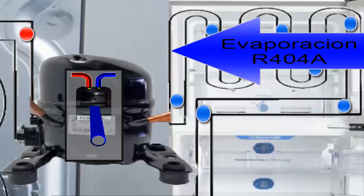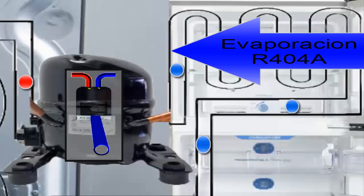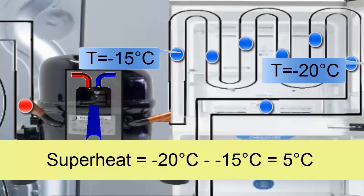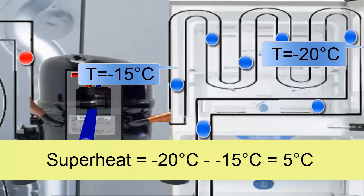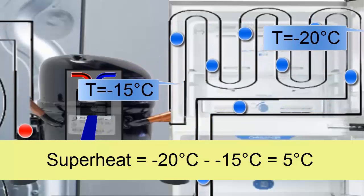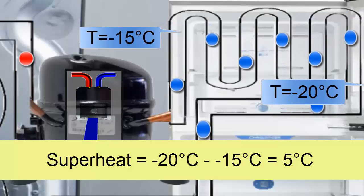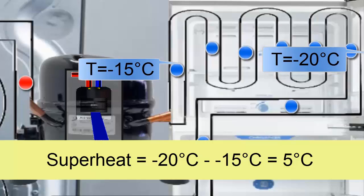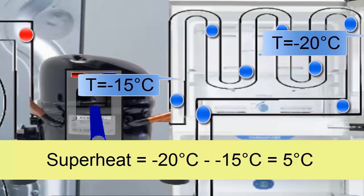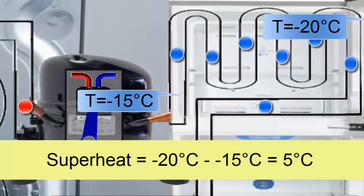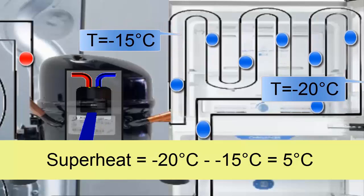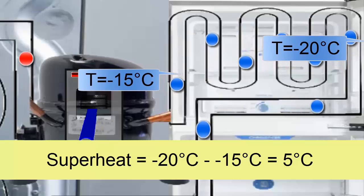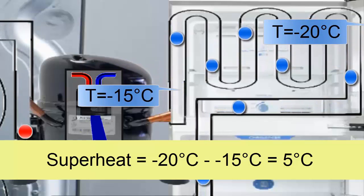The R404A, now in a gaseous state and with a slight temperature increase called superheat, is suctioned by the compressor. For this case, let's assume that the temperature of the R404A refrigerant in a gaseous state is minus 15 degrees Celsius. This means that the R404A refrigerant goes from minus 20 degrees Celsius to minus 15 degrees Celsius, so in this equipment the superheat is 5 degrees Celsius.